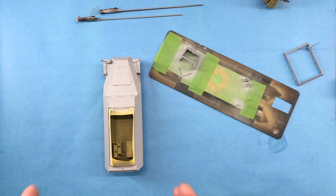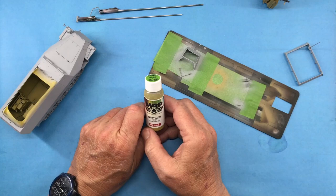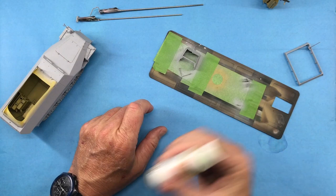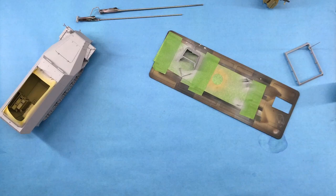I've already got everything primed using Mr. Surfacer 1500 cut 50/50 with Mr. Leveling Thinner. Now we're ready to start painting. For that I'm going to be using MRP Dark Yellow RAL 7028, also known as Dunkel Gelb. I think I'm going to change my camera over to the paint booth so you can see what I do.